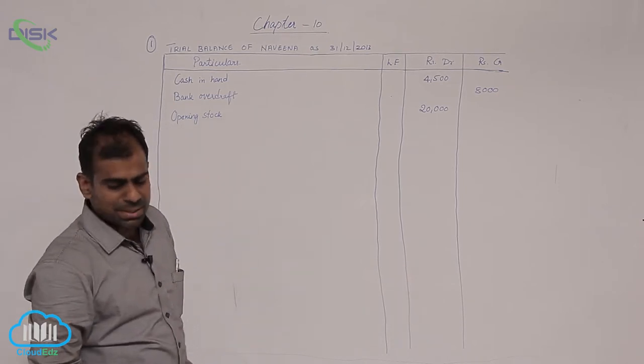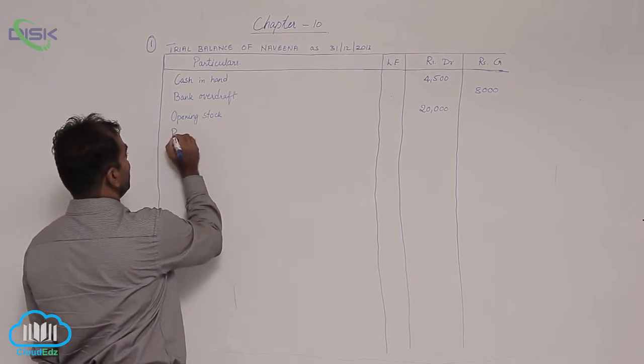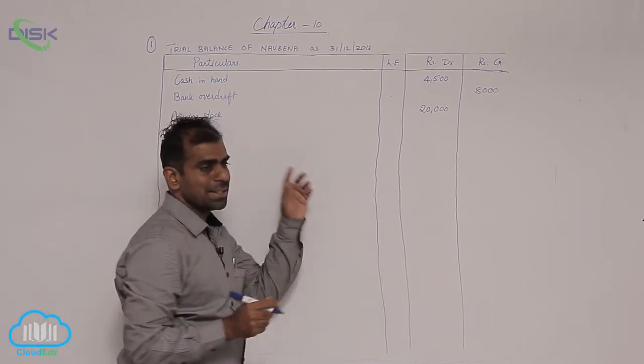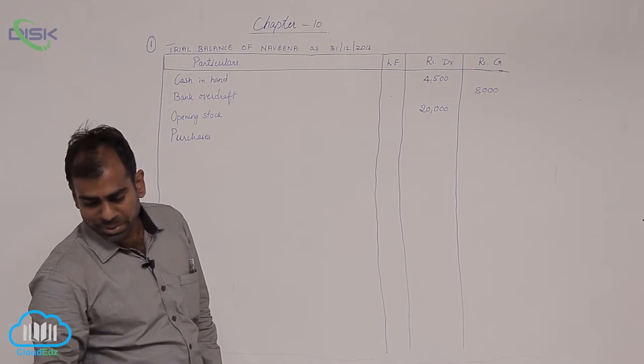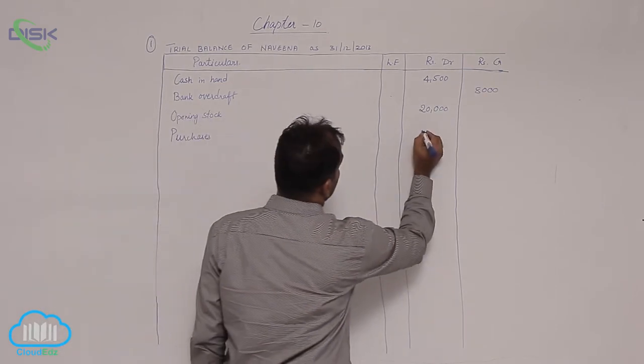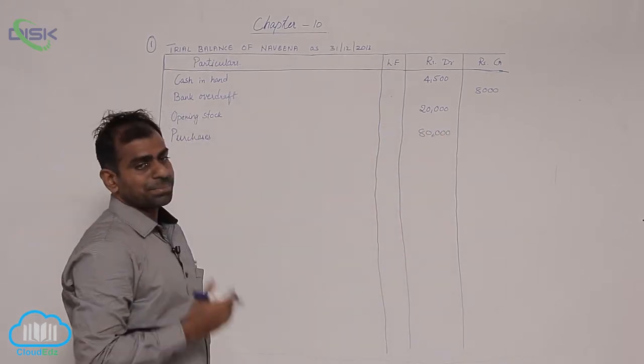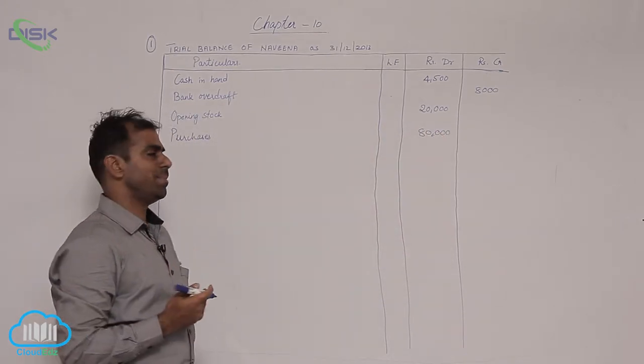Then purchases shows debit balance. If you cannot remember, quickly recall your journal entries and remember what you did to purchases in your journal entries. You have debited your purchases in journal. So that is why we say purchases shows debit balance.